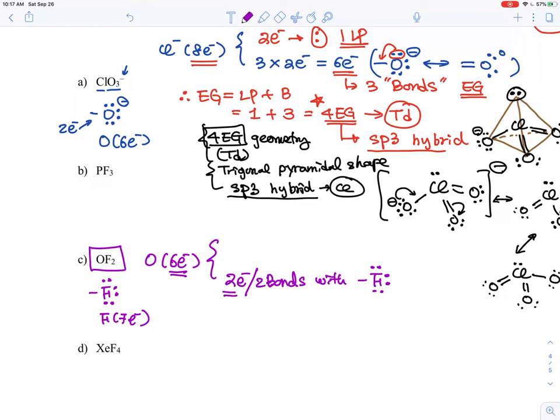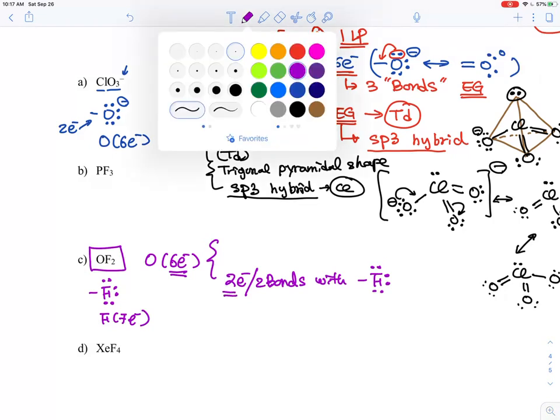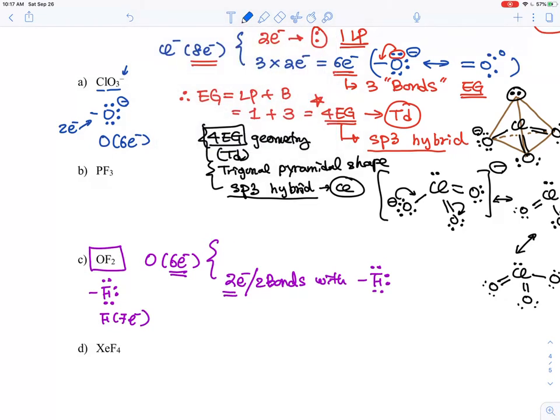Once you use that up, what you have left with is four electrons, and that four electrons, two electrons one lone pair, another two, another lone pair. So there are two lone pairs of electron group geometries, and you got two bonds.